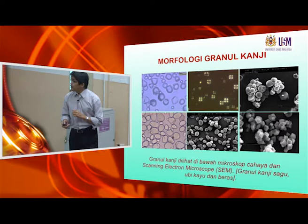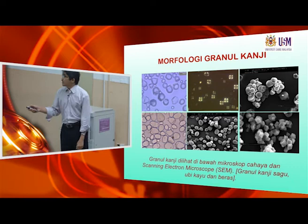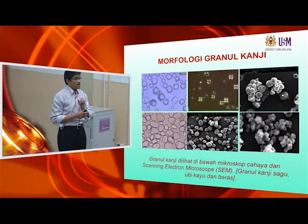The amount of amylose and amylopectin would affect the functional properties of starch, but there are other factors. Another factor is actually the granule itself — the shape of the granule. If you look under a light microscope at around 40 to 100× magnification, this is how it looks like.